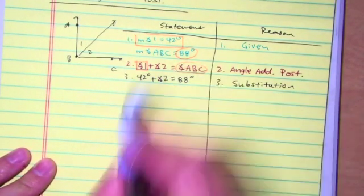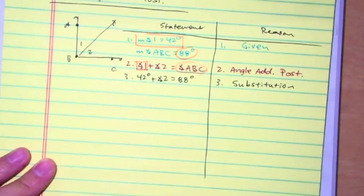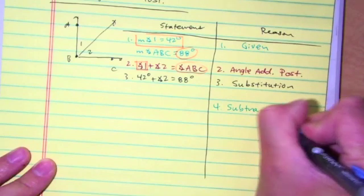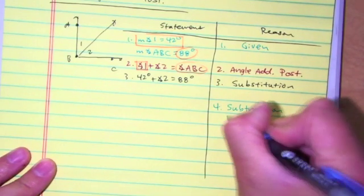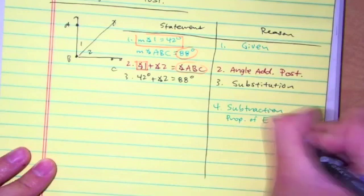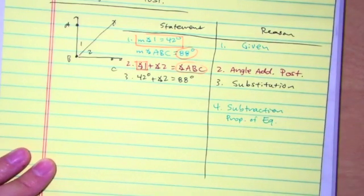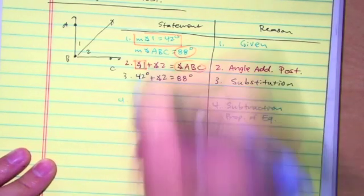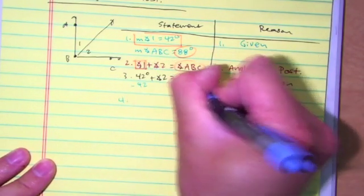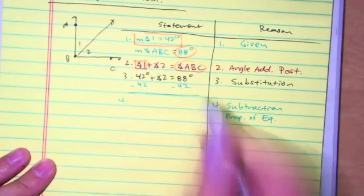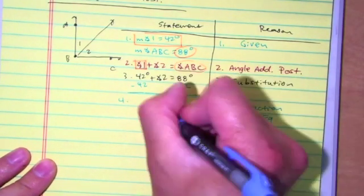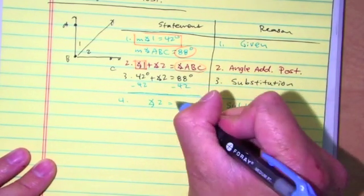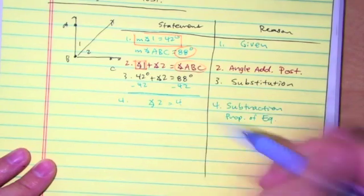And the last step: how do I get angle 2 by itself? We call this the subtraction property of equality. So I'm going to subtract 42 from both sides. Angle 2 equals 46 degrees.